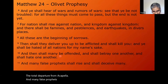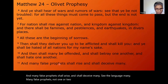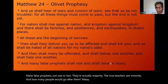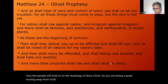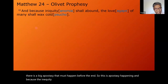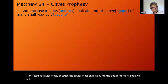'And many false prophets shall arise and shall deceive many.' The language is 'many' false prophets — not one or two, they are actually the majority. Very few people will hold on to the teachings of Jesus Christ. This is also called apostasia in Greek — apostasy in Thessalonians. There is a big apostasy that must happen before the end. 'And because lawlessness' — anomia in Greek, rightly translated as lawlessness, not 'iniquity' — 'shall abound, the agape of many shall wax cold.' The word 'wax cold' — psuko in Greek — is the snuffing out of the fire or flame within, the burning zeal we have at the beginning of our Christian journey.